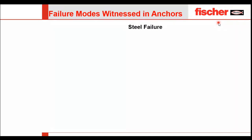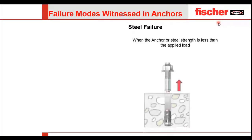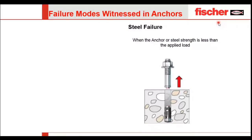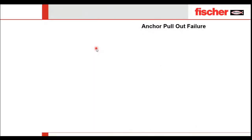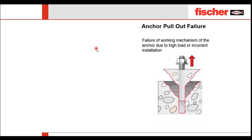Let's look at the different failure modes witnessed in anchors. As an introduction, I'll briefly cover the types. First is steel failure — when the anchor or steel strength is less than the applied load. You can see here how the anchor bolt failed due to steel failure. The second is anchor pullout failure — failure of the working mechanism of the anchor due to high load.